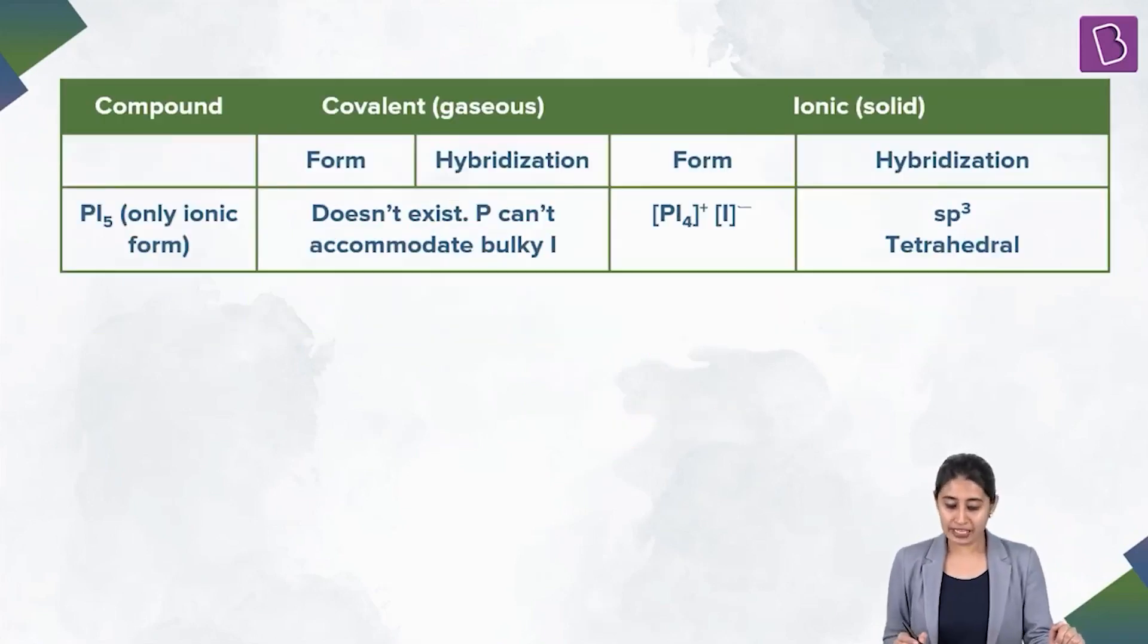PI5 does not exist as a covalent molecule. It only exists as ionic species like PI4+, I-, similar to PBR5 as PBR4+ and BR-. SP3 hybridization, geometry is tetrahedral. PF5, PCL5, PBR5, PI5 cases should be on your fingertips.